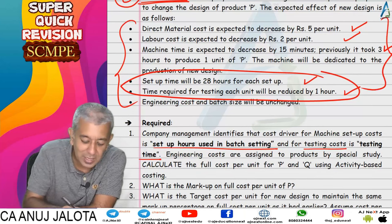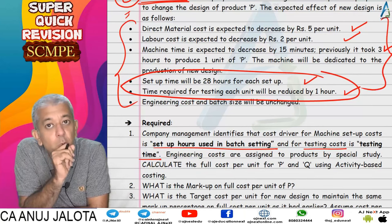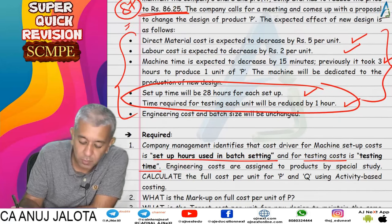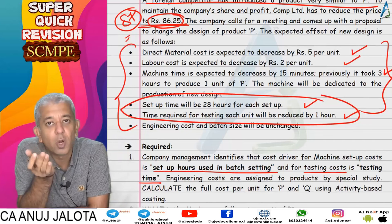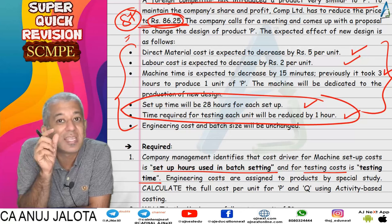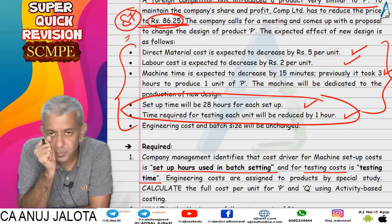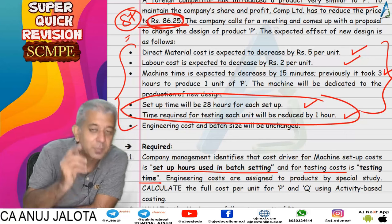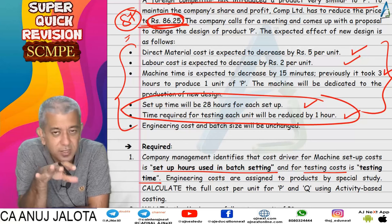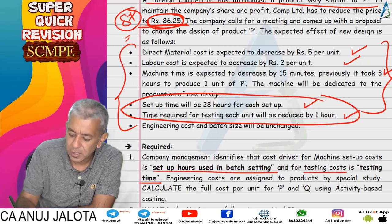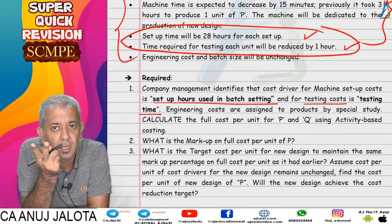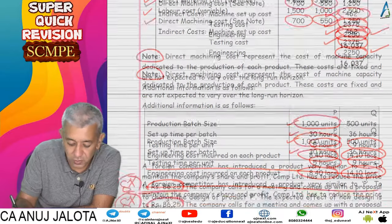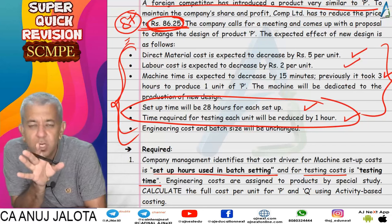We implemented the plan and calculated the new cost. We were also asked to compare it with the target cost. Target selling price was 86.25, and from that we subtracted target profit — maintaining the same profit percentage to sales as before. So we took the new selling price, subtracted that profit margin, and arrived at the target cost. We then compared the target cost to the cost after implementing the reductions to determine whether the target was achieved.